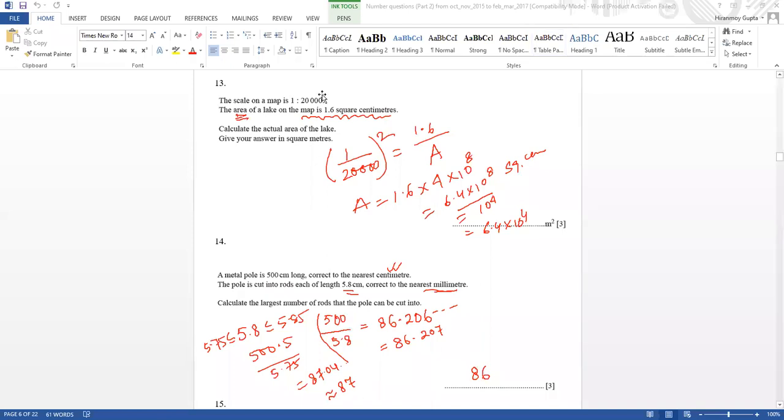Okay, and which one is the correct one, this one or this one? Sir, I think 87 is correct. Yes, 87 is the correct one. That's why I marked, when it's reading the question, the nearest millimeter, to mention the largest number of rods can be cut into. So what you have to do, you have to find - division is the correct form of operation, but you have to use the lower bound and upper bound. So it is not 86, it should be 87.